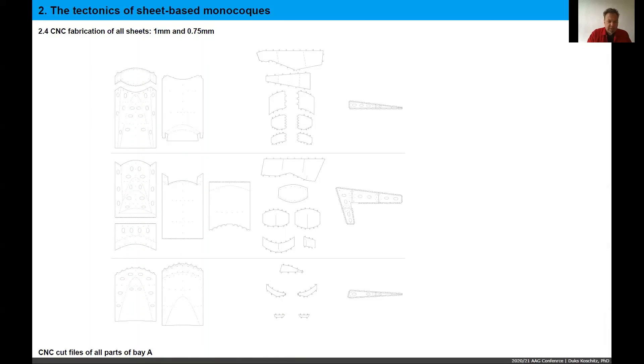This is the CNC cut file for Bay A. On the left, you see the larger surfaces for the inner and the outer shell. And on the right, you see the dispersed spacers between the two surfaces that allow us to control the exact position of the two surfaces.